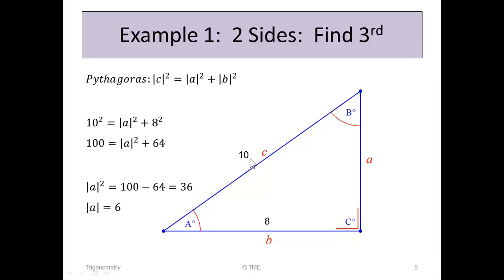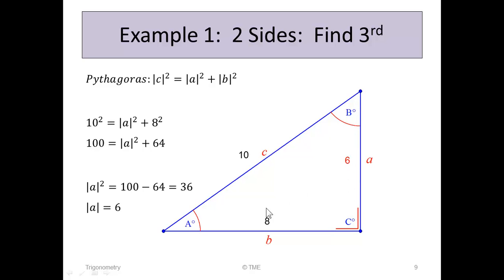Pythagoras' rule states that the hypotenuse squared — 10 squared in this case — is A squared plus B squared. We know B, so the only unknown is A. So using Pythagoras: 10 squared equals A squared plus 8 squared; 100 equals A squared plus 64. Taking 64 to the other side, A squared equals 100 minus 64, or 36. The square root of A squared is A, so the length A is 6. We have now solved for the third side.